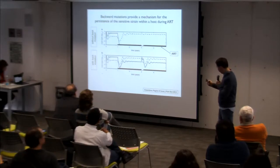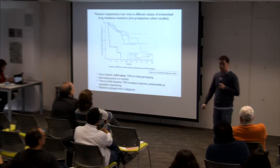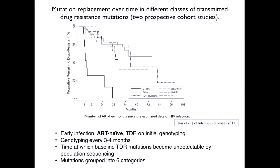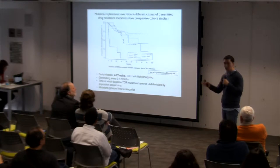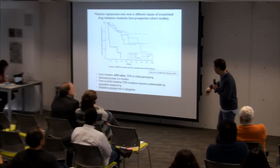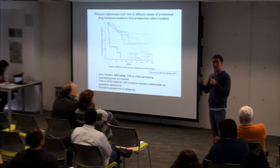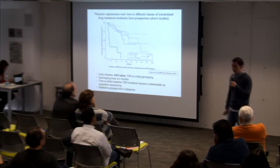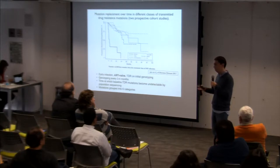We see that backward mutations are really present. We see them in clinical studies that have followed patients infected with HIV — infected with drug resistant strains from the beginning (transmitted drug resistance) — who haven't received treatment for the first hundred months or years. What we see is that drug resistant strains, because of the fitness cost of resistance, are eventually replaced by the drug sensitive strain, which is more fit.